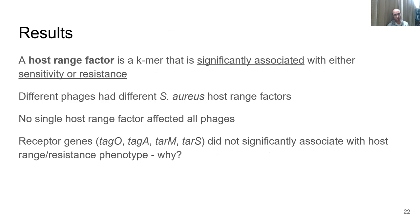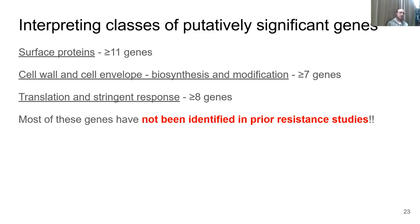A host range factor is a K-mer significantly associated with either sensitivity or resistance. Different phages had different S. aureus host range factors, and no single host range factor affected all the phages. For the most part there were a small number of exceptions, like TAR-P and TAG-H. Receptor genes — wall teichoic acid biosynthesis genes — did not significantly associate with the host range or resistance phenotype, probably because these are under purifying selection since they're involved in so many other cellular processes, ranging from cell division to antibiotic resistance to virulence.